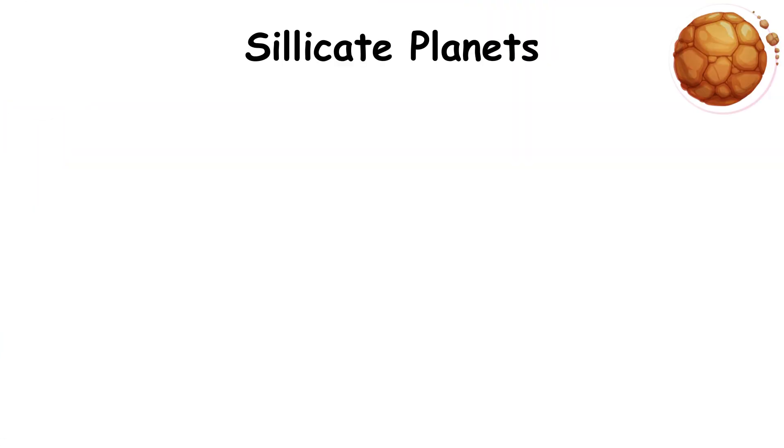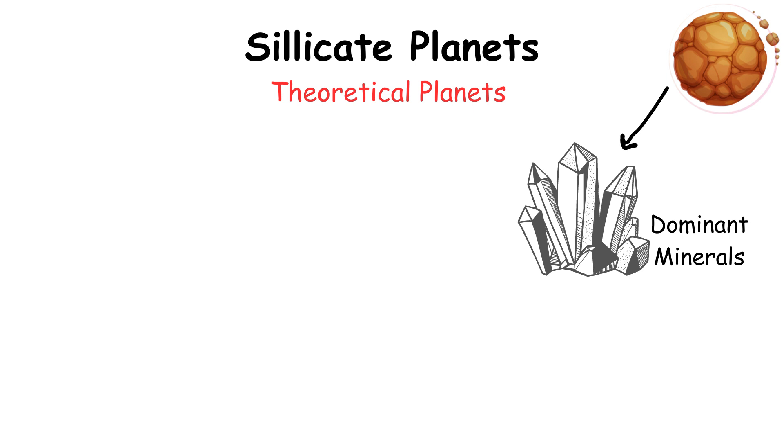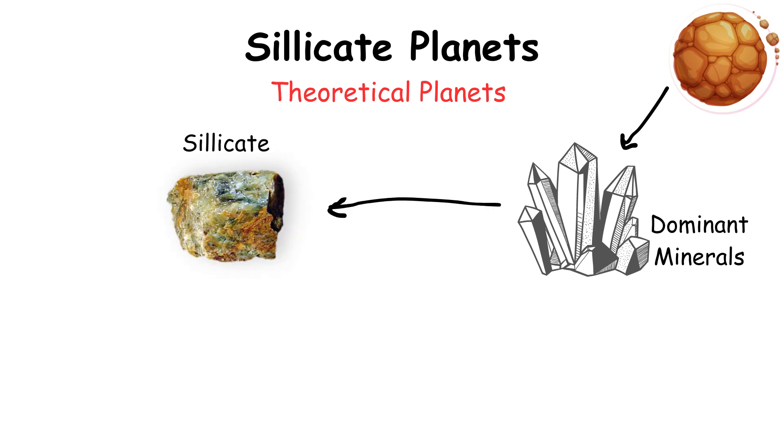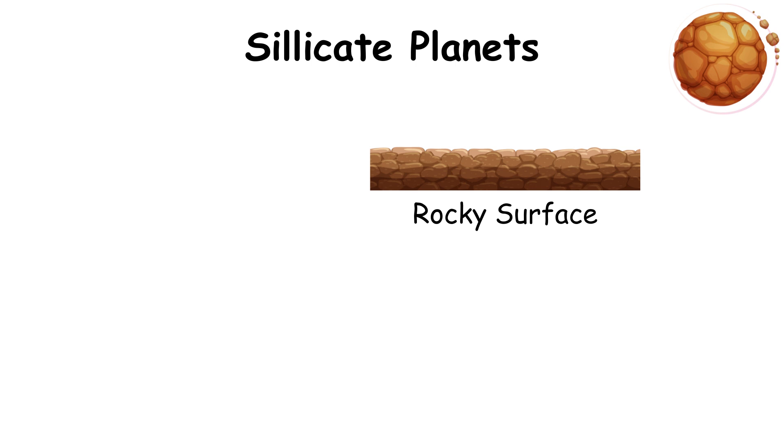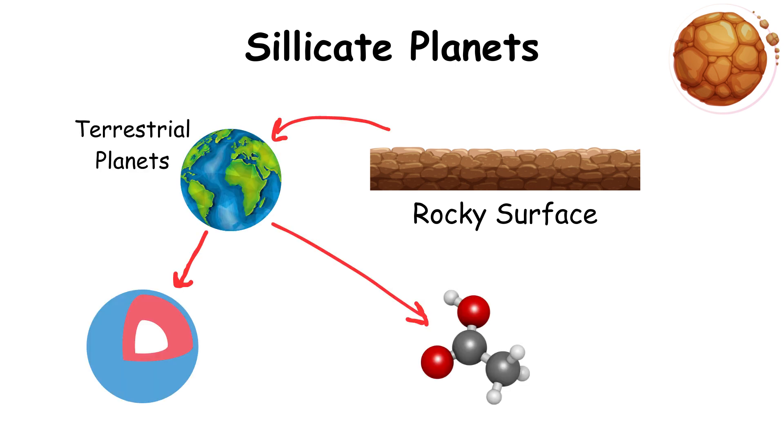Silicate planets are theoretical planets where the dominant minerals in their composition are silicates, such as olivine and pyroxene. These planets would have rocky surfaces similar to terrestrial planets but may have different internal structures and compositions.